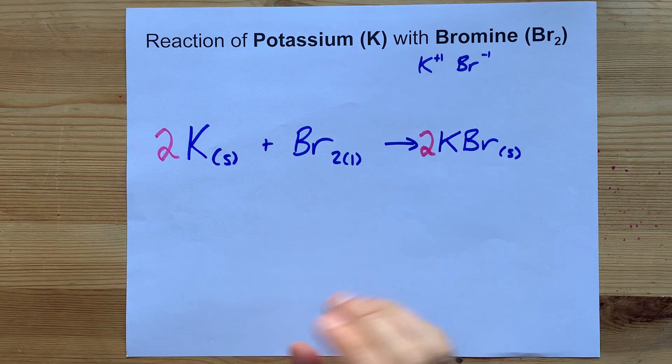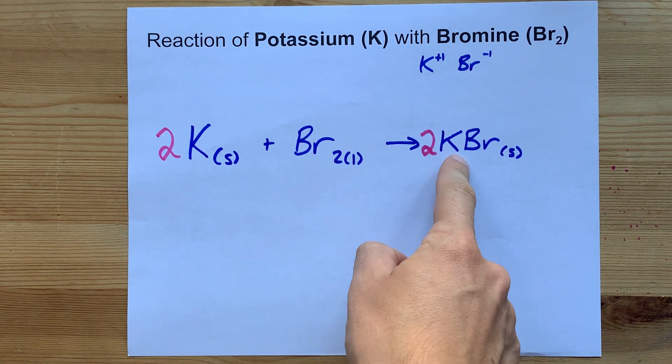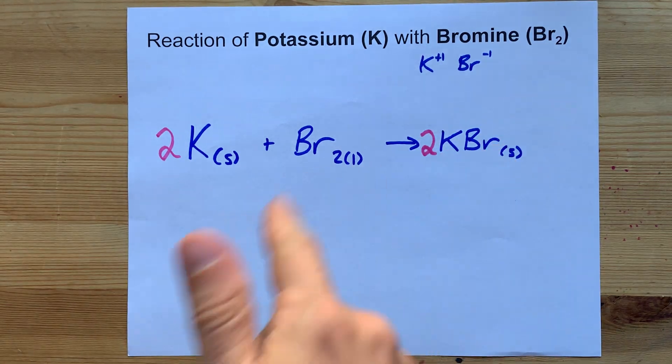It's as simple as that. No byproducts. Nothing else to worry about. Potassium and bromine make potassium bromide. End of story. Best of luck.